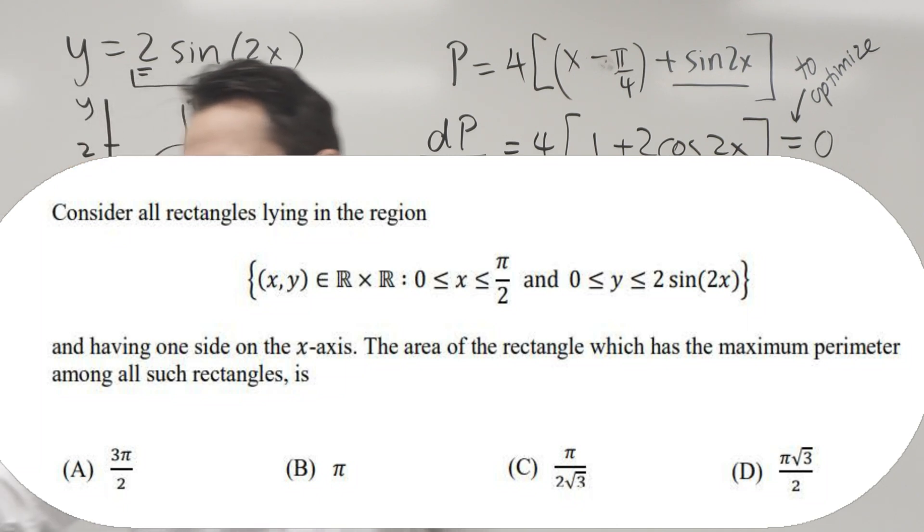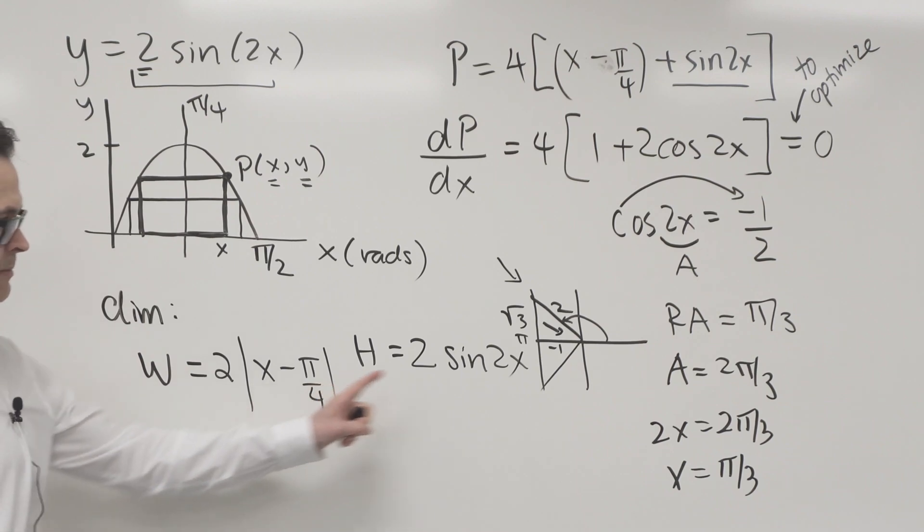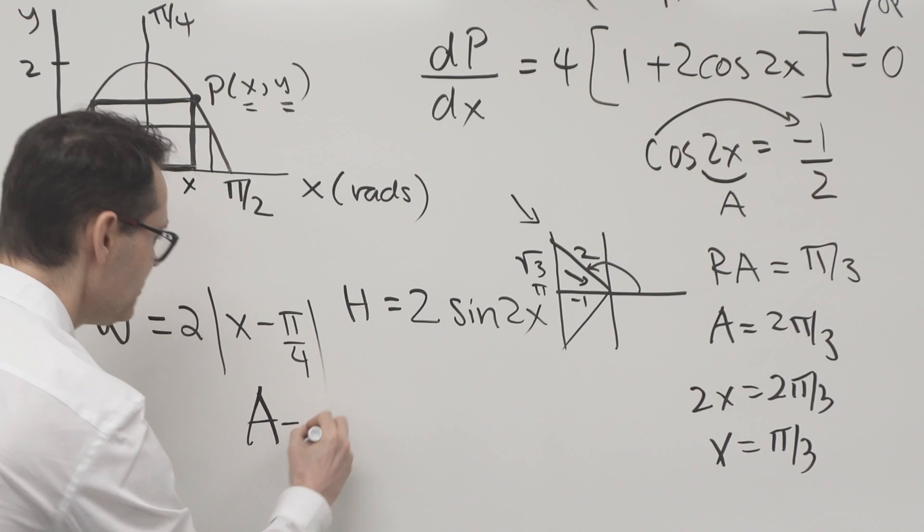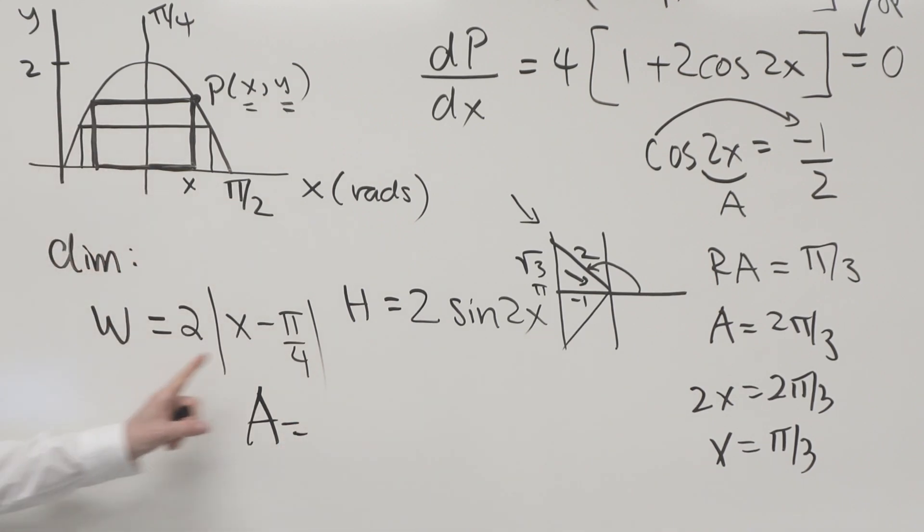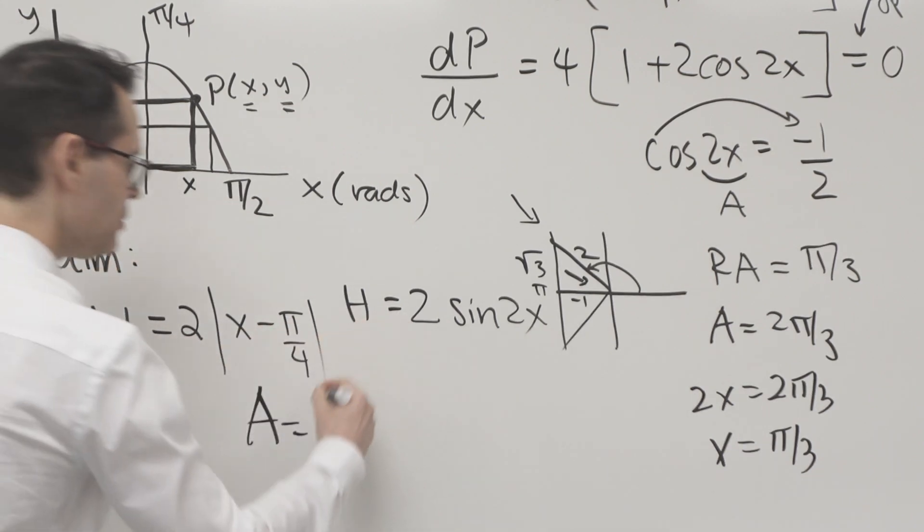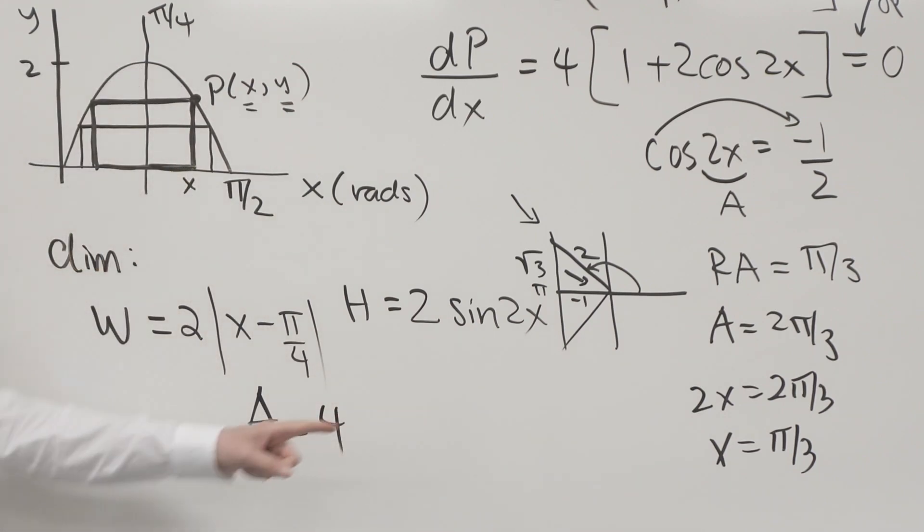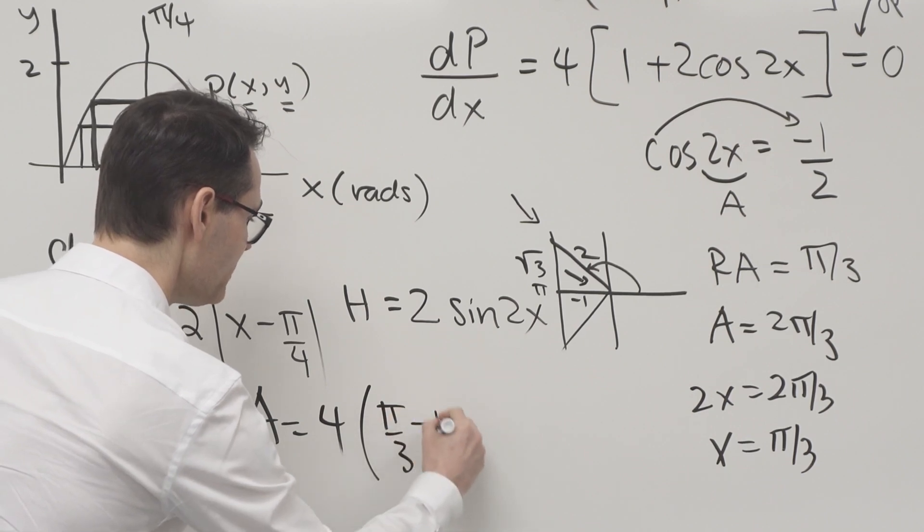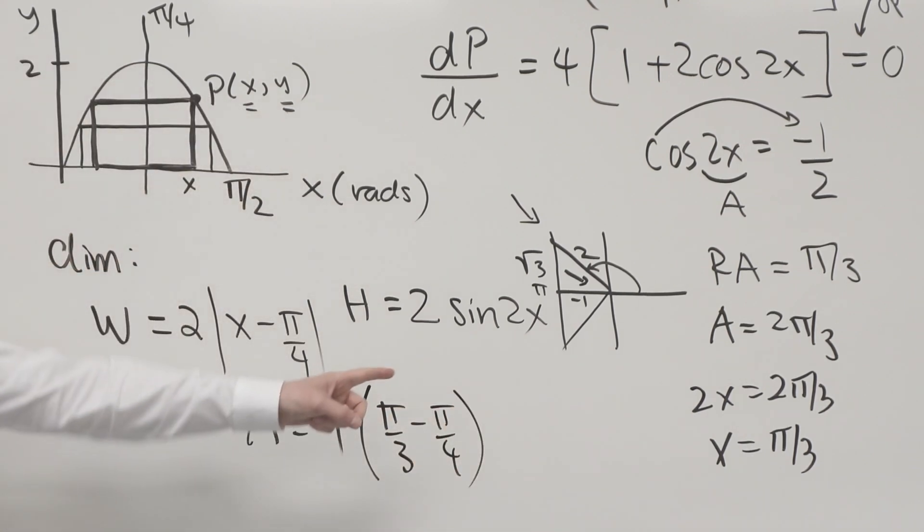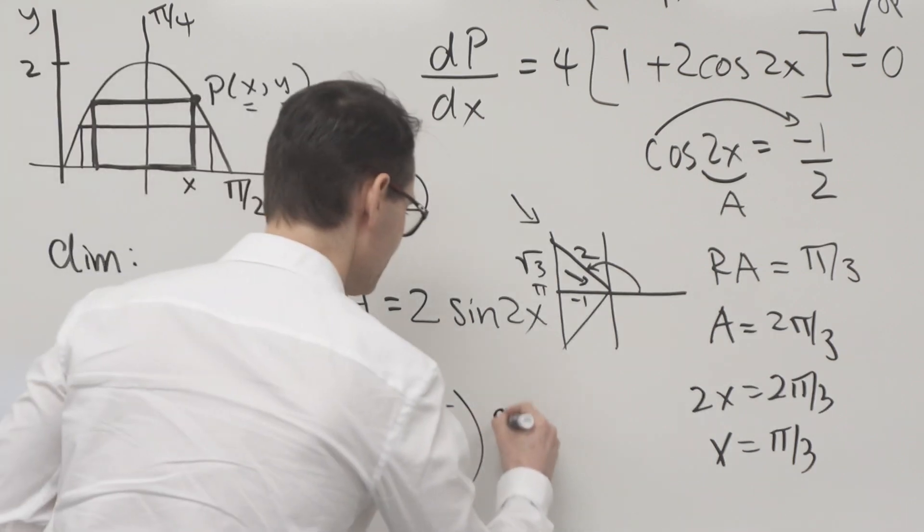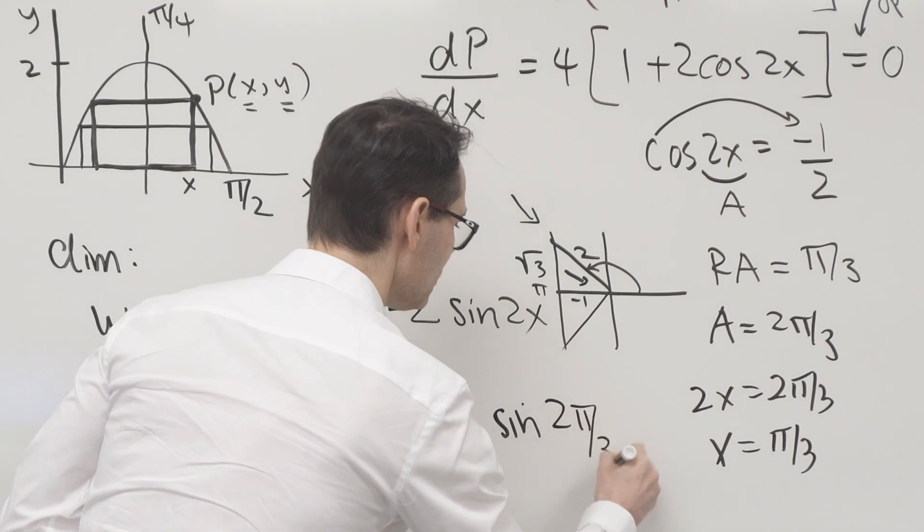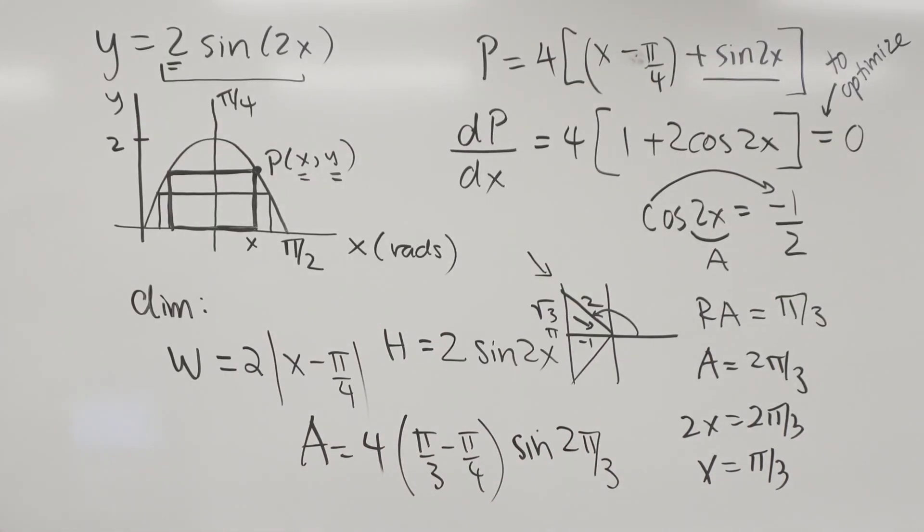The answer actually needs to be an area. It says the area of the rectangle. So I'm going to take the dimensions and use this to calculate the area. So the area is going to be equal to this times this, or two times two is four out front. I'm going to place pi over three here, so that's going to be pi over three minus pi over four, multiplied by the sine of two times pi over three, or two pi over three.